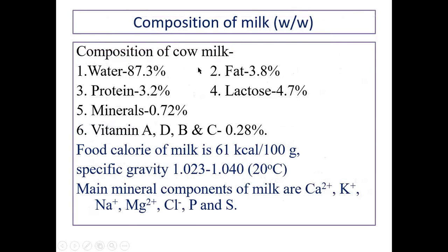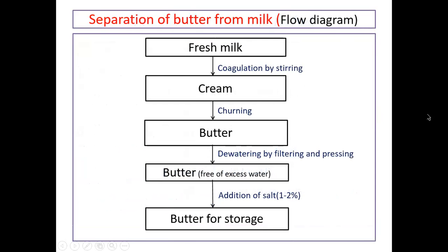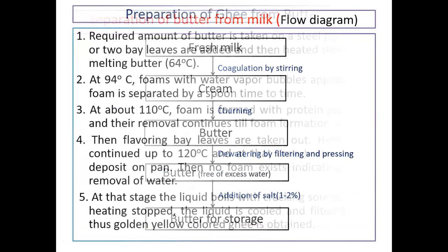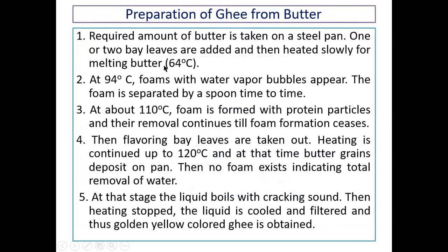This is the composition of cow milk — different types of minerals, protein, water, fat, lactose, vitamins, etc., are present in milk. This is the separation of butter from milk; you just have to know the flowchart of this. Here is the description for preparation of ghee from butter.